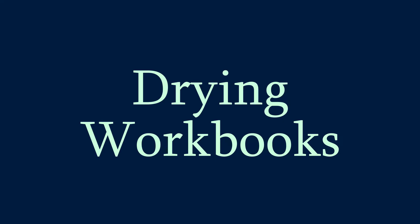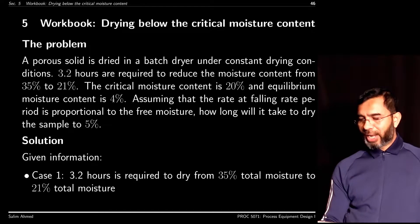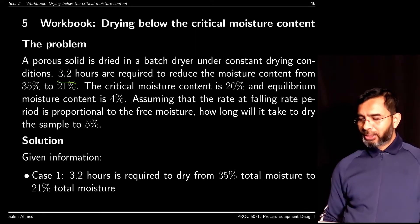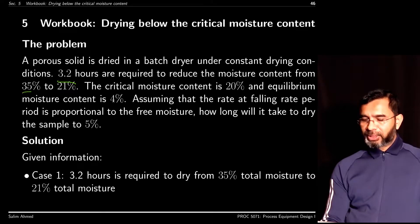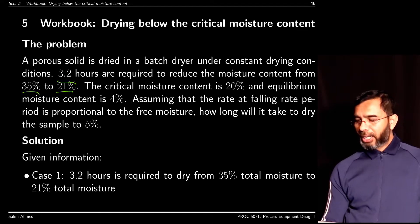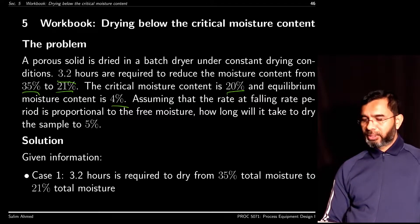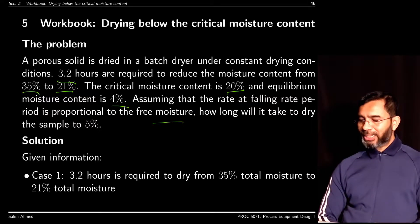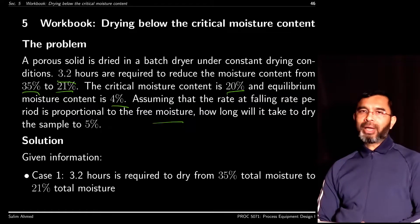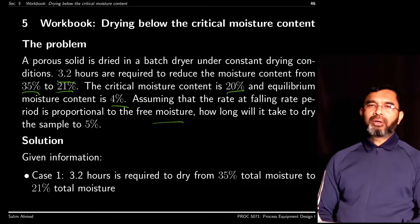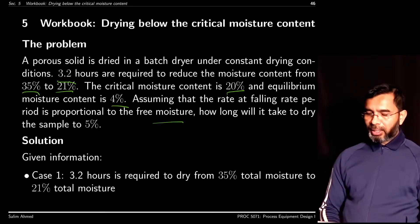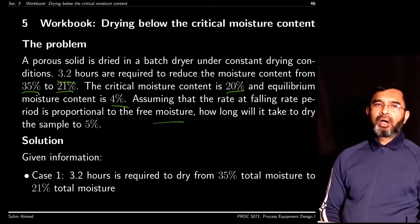Let's look at a workbook on drying time calculation. A porous solid is dried in a batch dryer under constant drying conditions. 3.2 hours are required to reduce the moisture content from 35% to 21%. The critical moisture content is 20% and the equilibrium moisture content is 4%. Assuming the rate in the falling rate period is proportional to the free moisture, how long will it take to dry the sample to 5%?